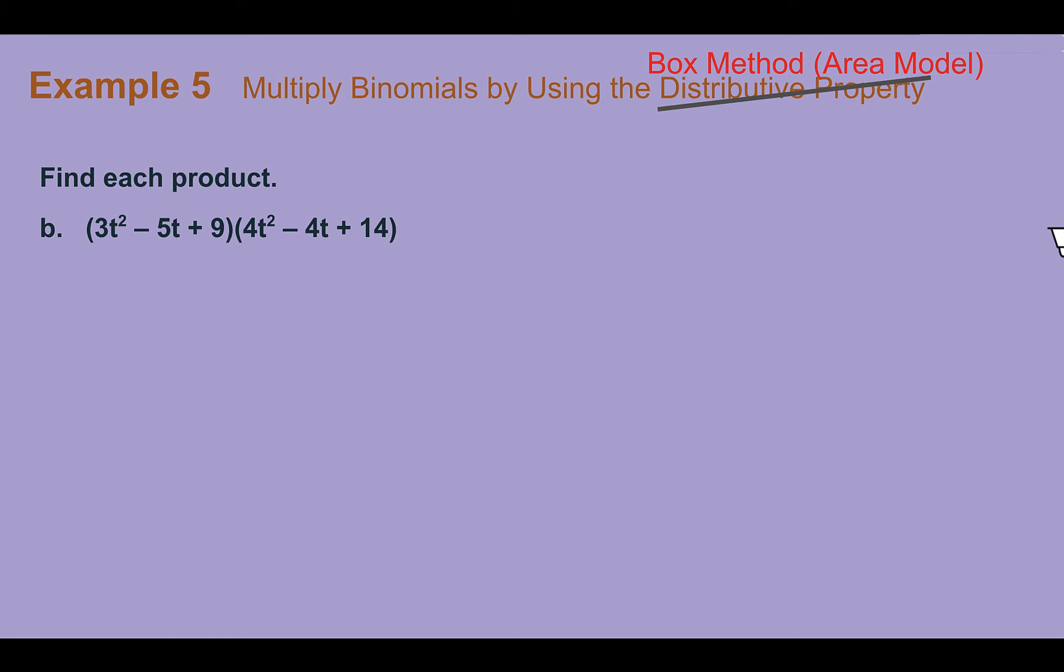Even if we're multiplying longer polynomials, here we have a trinomial times a trinomial, the box method might actually be your best bet. If you were trying to FOIL this, what do you do about the middle terms? You still have to do the middle times everything. This can get really confusing to keep track of what you've already done. So, here I would need a 3x3, since there's three terms in each. Place my values on the side, and I can go through and multiply each box together. So, I'd have 12t to the 4th, negative 12t to the 3rd, and positive 42t squared.